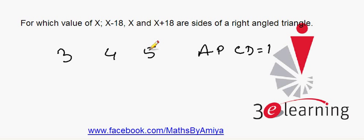So can we say here our sides are in AP with common difference of 18? We just identified the given sides are in AP with common difference of 18.